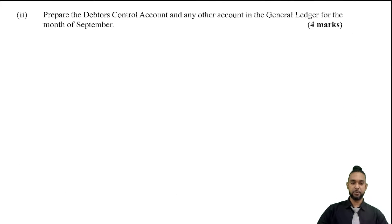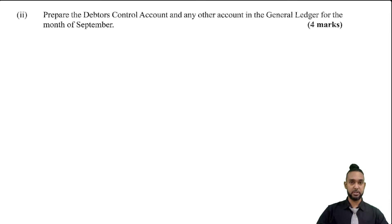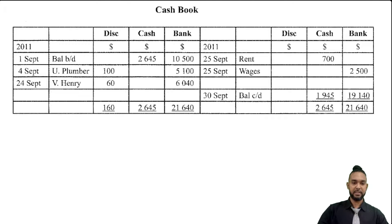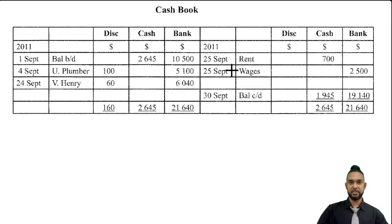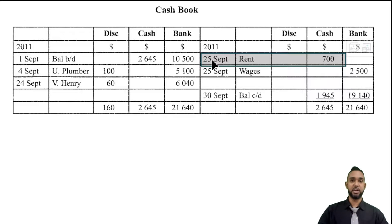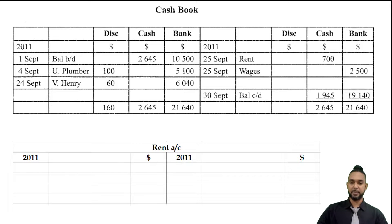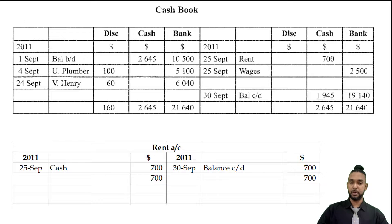Now for any other accounts in the general ledger. The general ledger holds accounts for revenues, expenses, assets, liabilities, capital, provisions — not the personal accounts for debtors or creditors. On the credit side of the cash book we see payments for rent and wages. For the rent account, there's a cash payment of $700 — recorded on the credit side of the cash book because it's a payment reducing cash. So the debit entry of $700 goes in the rent account, there are no other items, and the balance carried down is $700, brought down on the debit side.